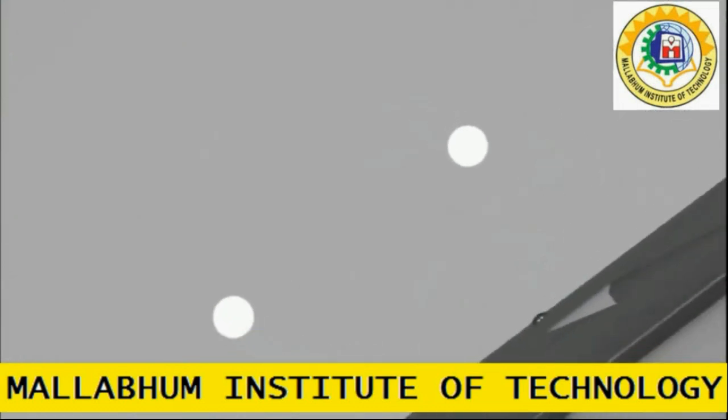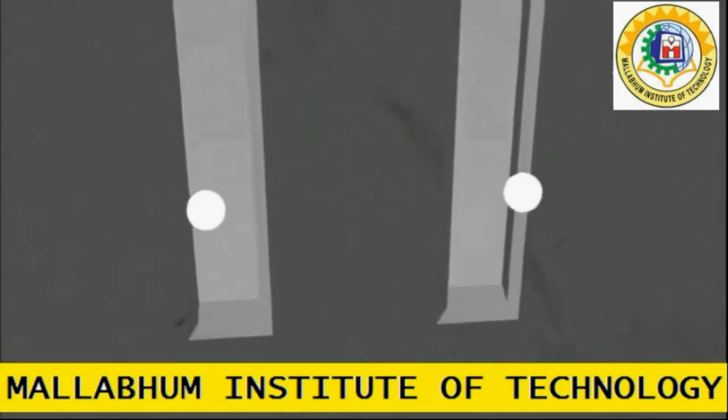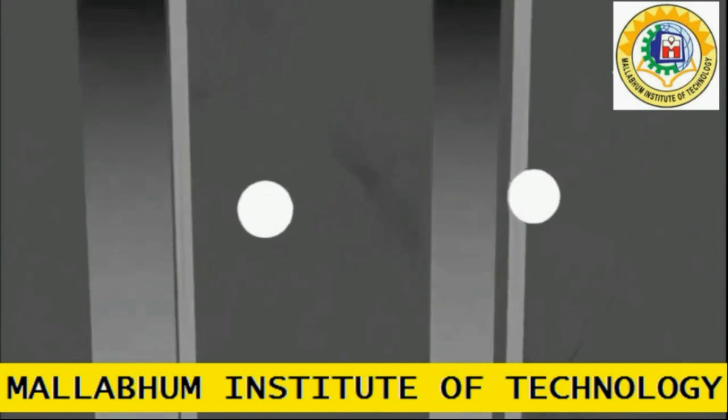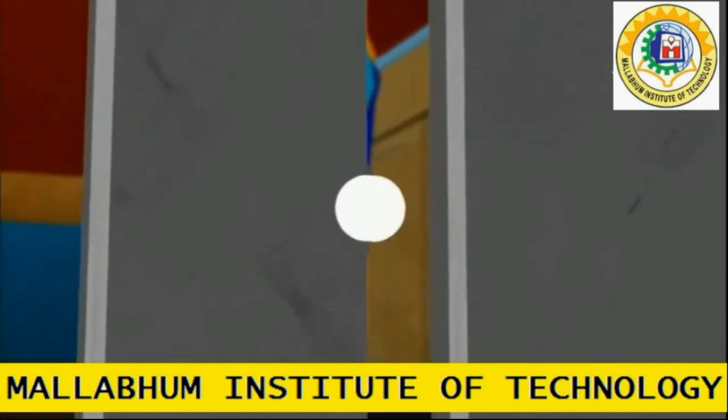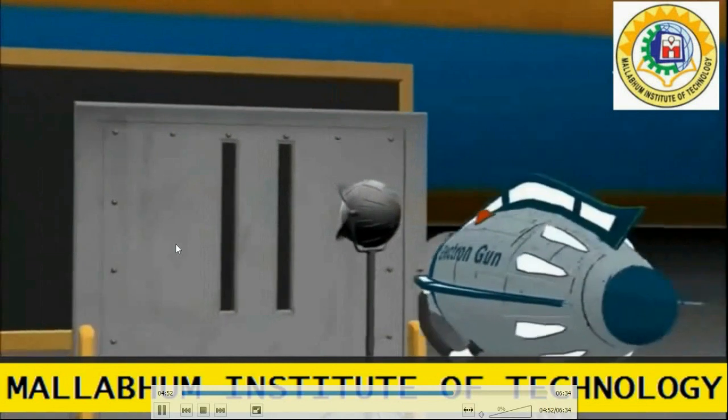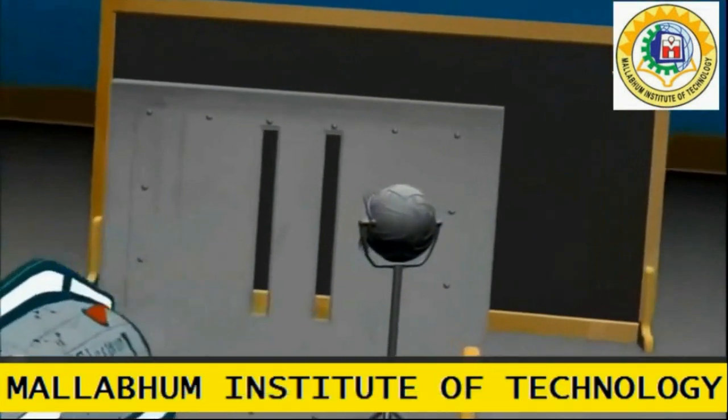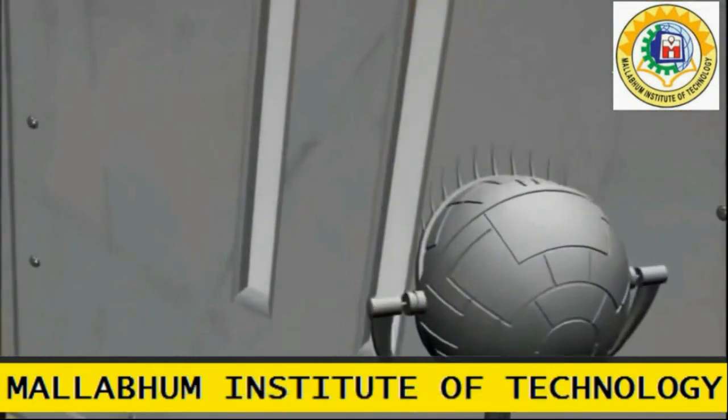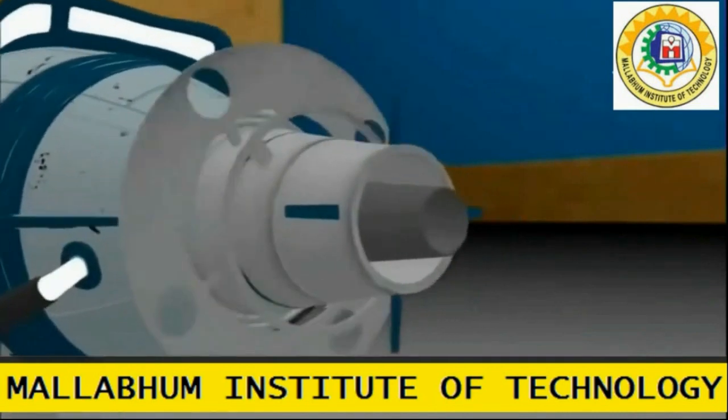Now they think a different way. So now they placed an observer machine. Now this observer machine can accurately measure the smallest changing behavior of the electron. And they placed it just before the slit.